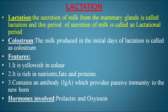The umbilical cord is tied and cut, and the placenta is discharged. The secretion of milk from the mammary glands is called lactation, and this period is called the lactational period. The milk produced in the initial days of lactation is called colostrum — it is yellowish in color, rich in nutrients, fats, and proteins, and contains the antibody IgA, which provides passive immunity to the newborn.